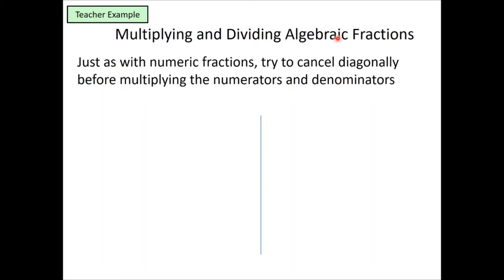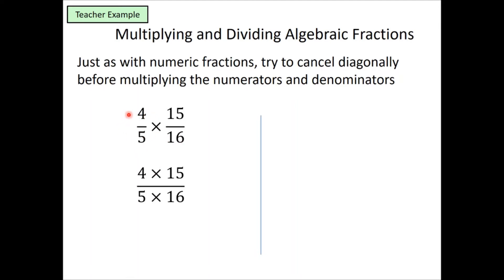When it comes to multiplying and dividing algebraic fractions, the first part we need to make sure we remember the rules for normal multiplying and dividing fractions — those still apply. So for example, if I was to multiply this fraction out, it'll be 4 times 15 and 5 times 16. The normal rule is just to multiply them across. But what we also need to do is try to cancel them down diagonally where possible, so that we're simplifying as we go along.